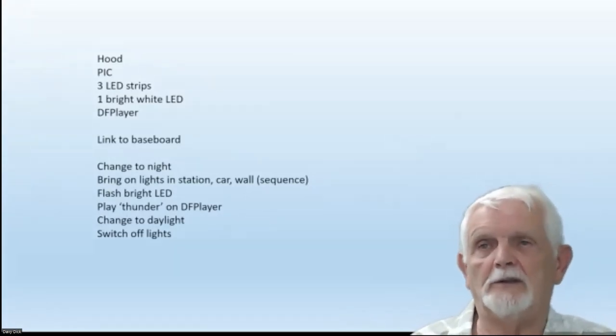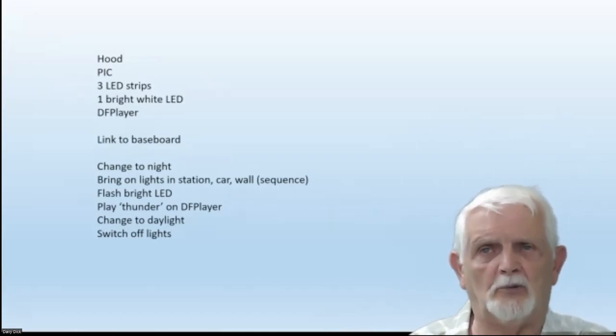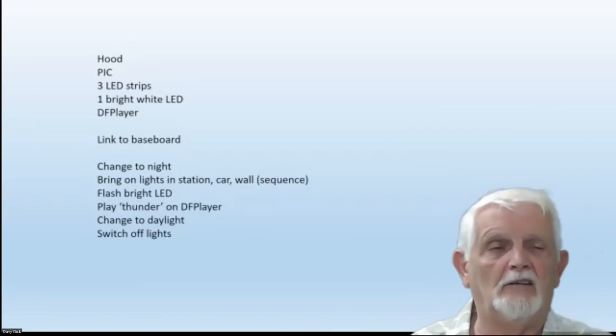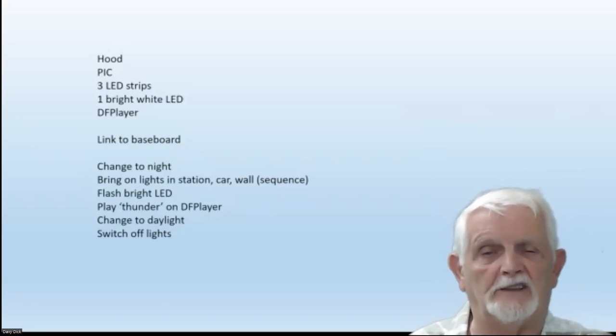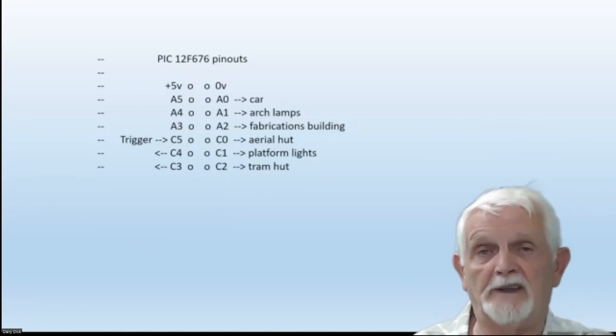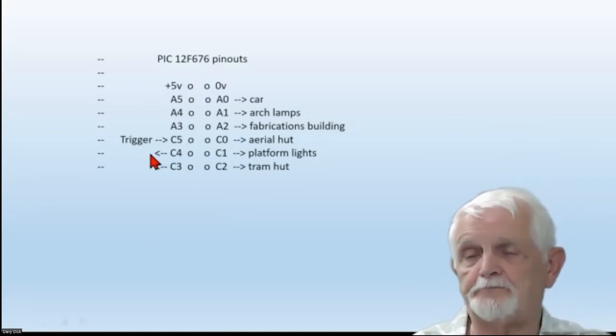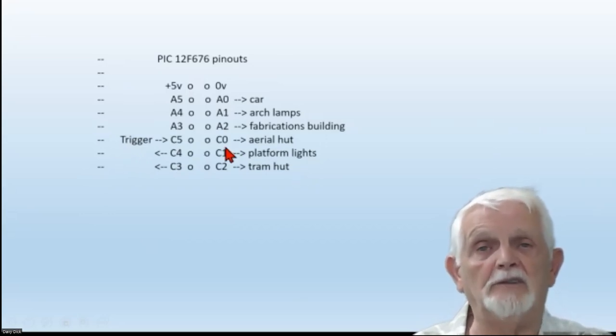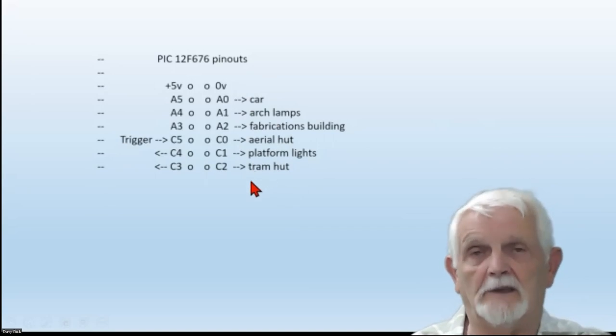There's what we've got under the hood. We've got a PIC to control it, three LED strips, one very bright white LED, the one we make flash for lightning, a DF player for the thunder. And there's a sequence that goes on. The link, this PIC tells the baseboard, go to the night sequence which brings on all the various lights. And then it'll flash the lightning, play the thunder, and then we're back to nice weather again. We've got a special PIC just to do that. The trigger comes in from the hood, and it then brings on in turn the various lights that are inside the buildings and the vehicles. And then the trigger goes off again, will gradually extinguish those lights again.